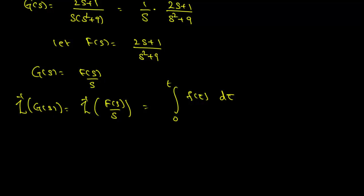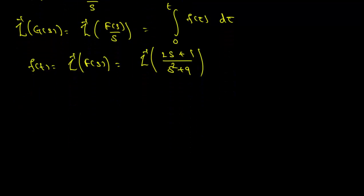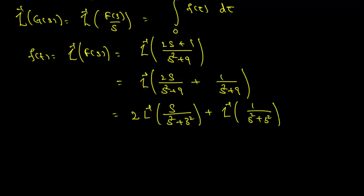Let us find f(t), which is the inverse Laplace transform of F(s). This is the inverse Laplace transform of (2s + 1) / (s² + 9). This can be written as the inverse Laplace transform of 2s/(s² + 9) plus 1/(s² + 9). Since the inverse Laplace transform is linear, this is 2 times the inverse Laplace transform of s/(s² + 9) plus the inverse Laplace transform of 1/(s² + 9).